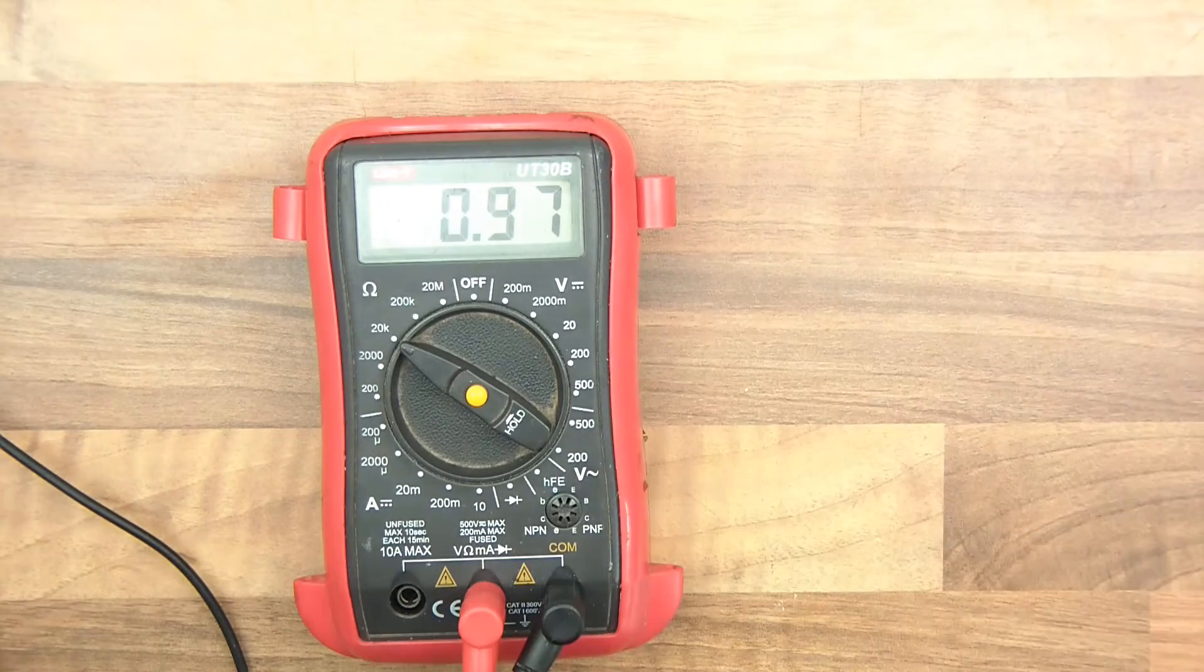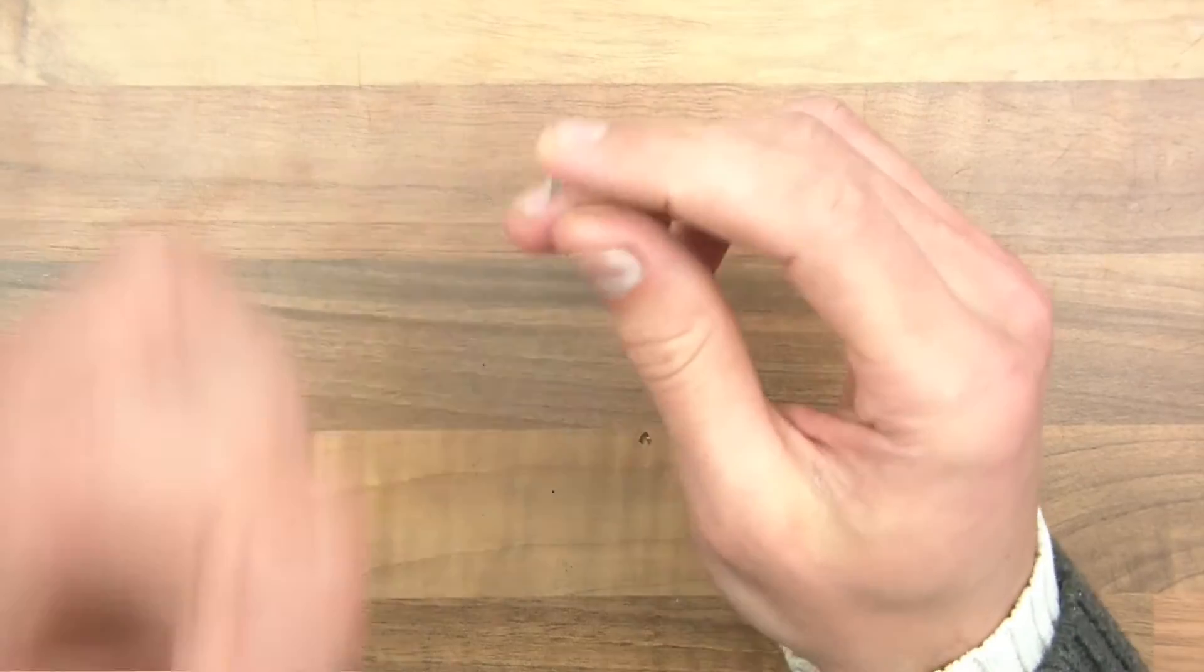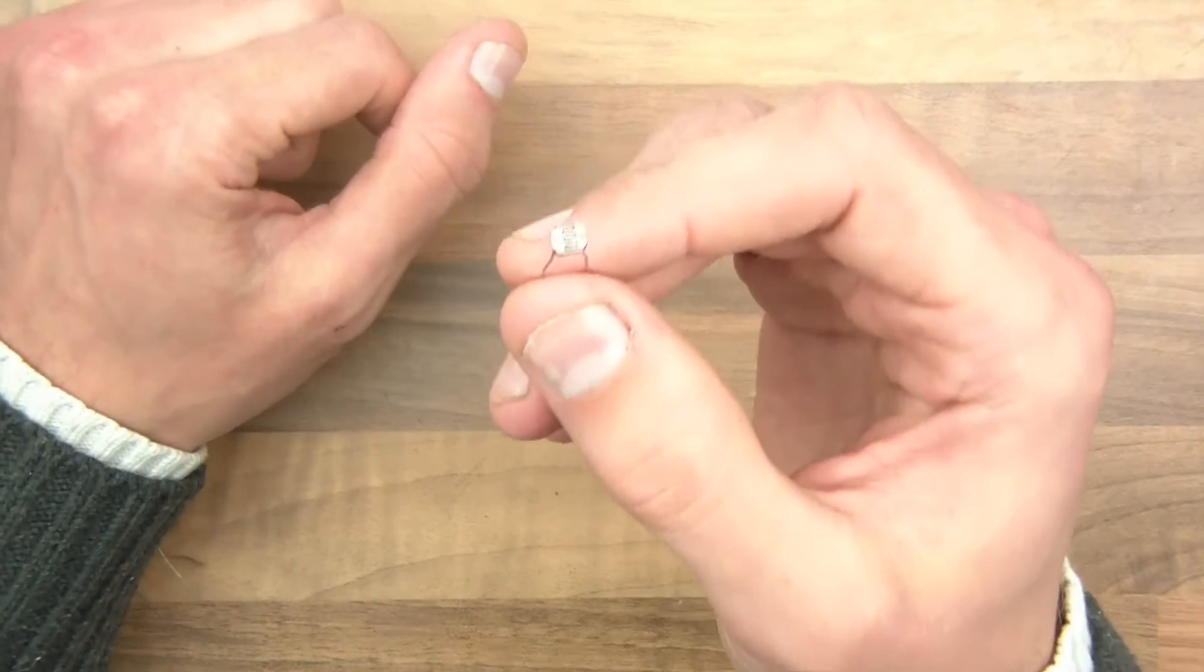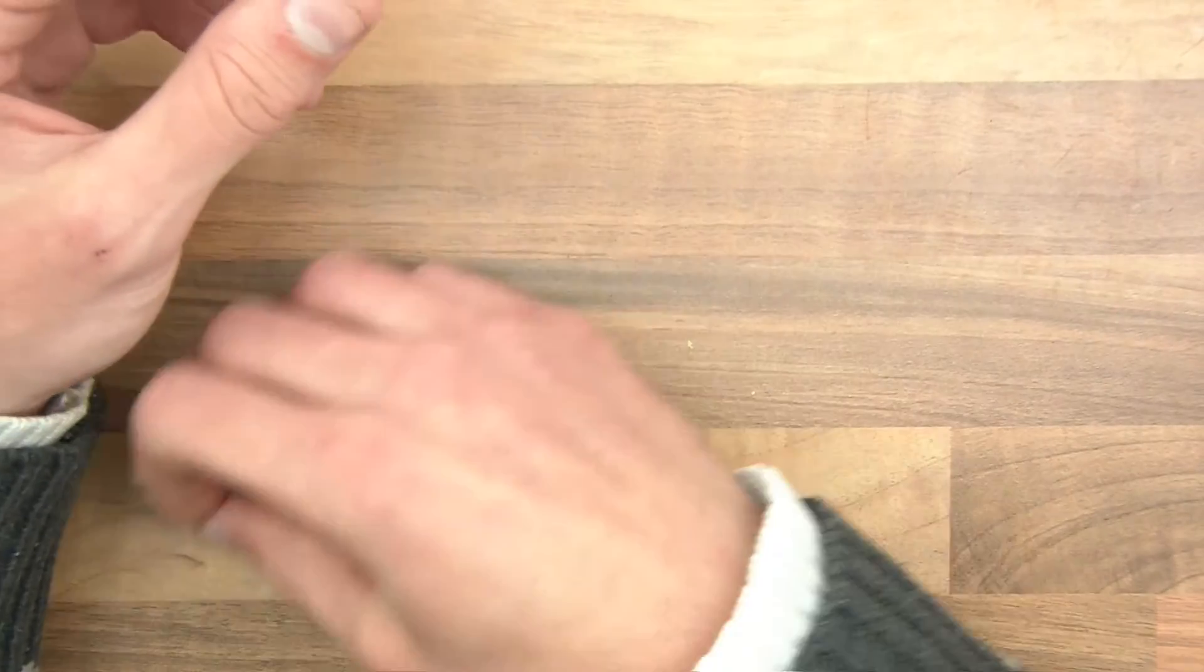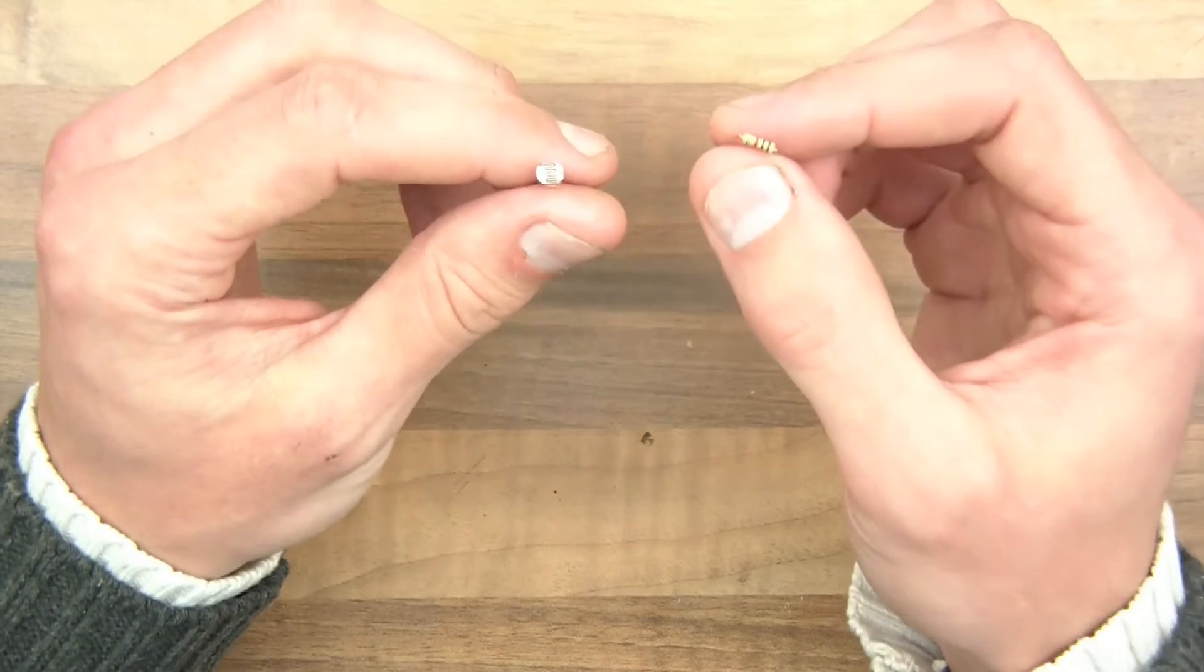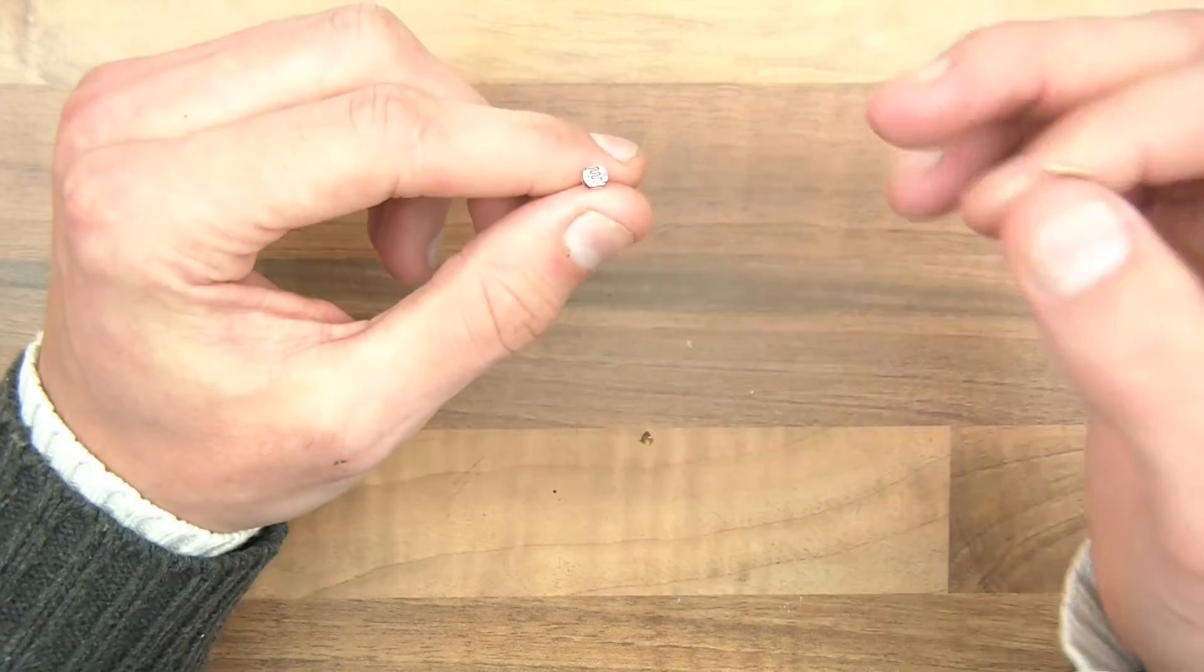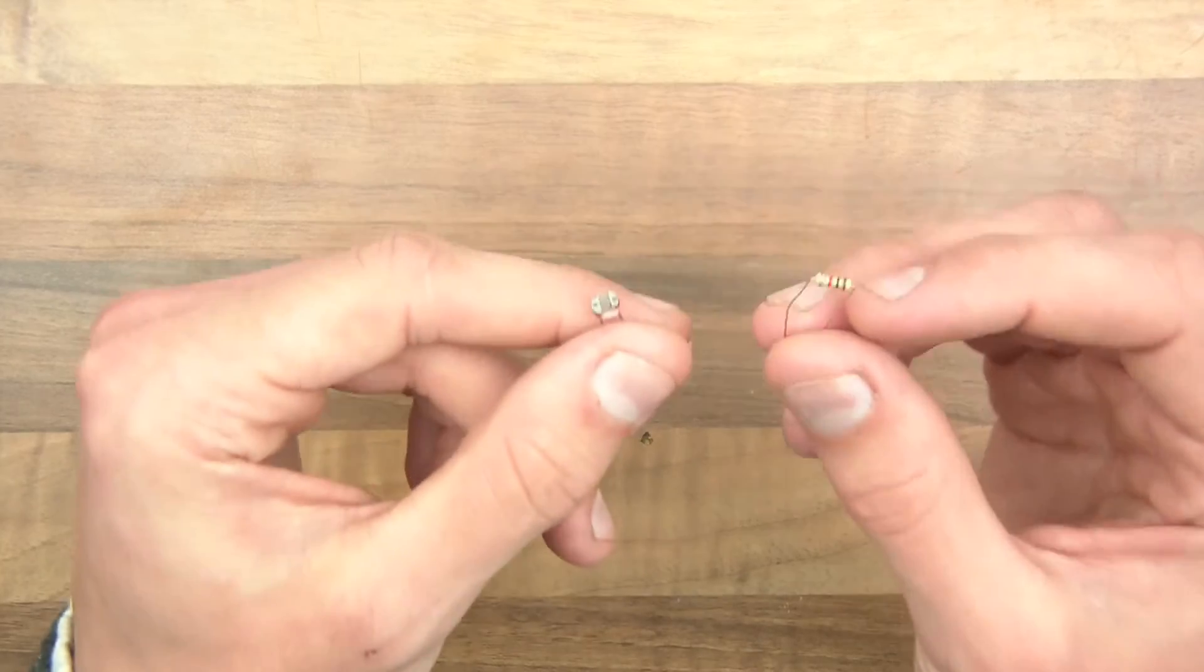Okay, so I've shown you the LDR, how light affected it. And the ambient light is such that this, in this light, is around about 1K. So I've got another 1K resistor and this is a fixed resistor. So we've got a 1K fixed and we've got 1K in this light. In more light, the resistance goes down. In less light, the resistance goes up. So we've got a fixed and a variable.